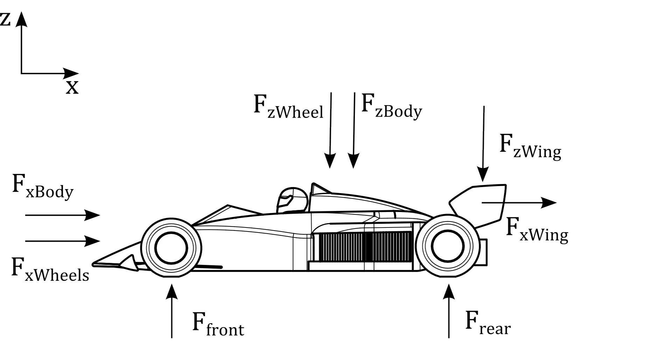The CAD model was divided up into body, wheels and rear wing, which meant that the forces could be extracted independently. The forces were combined to give the front and rear distribution.